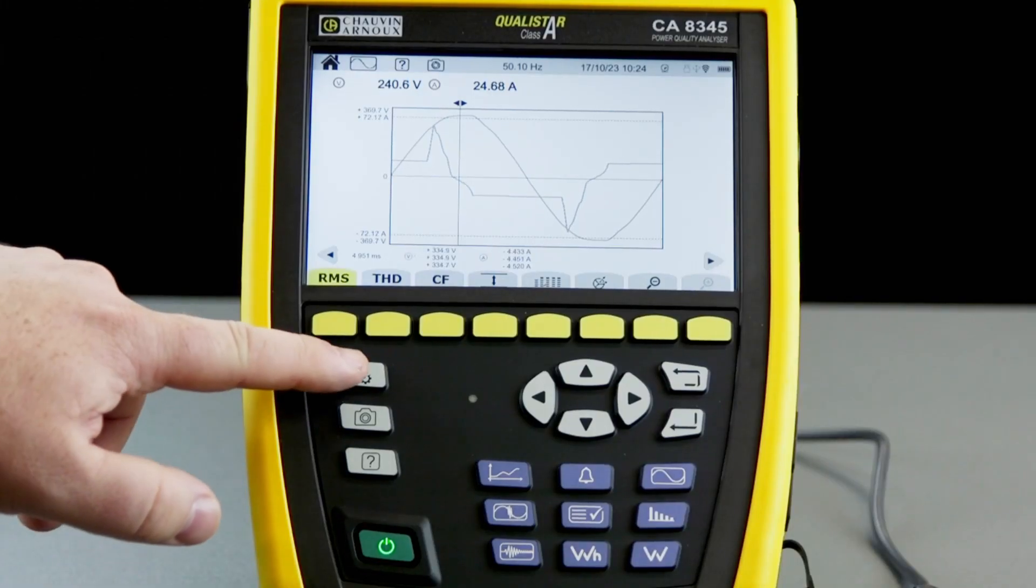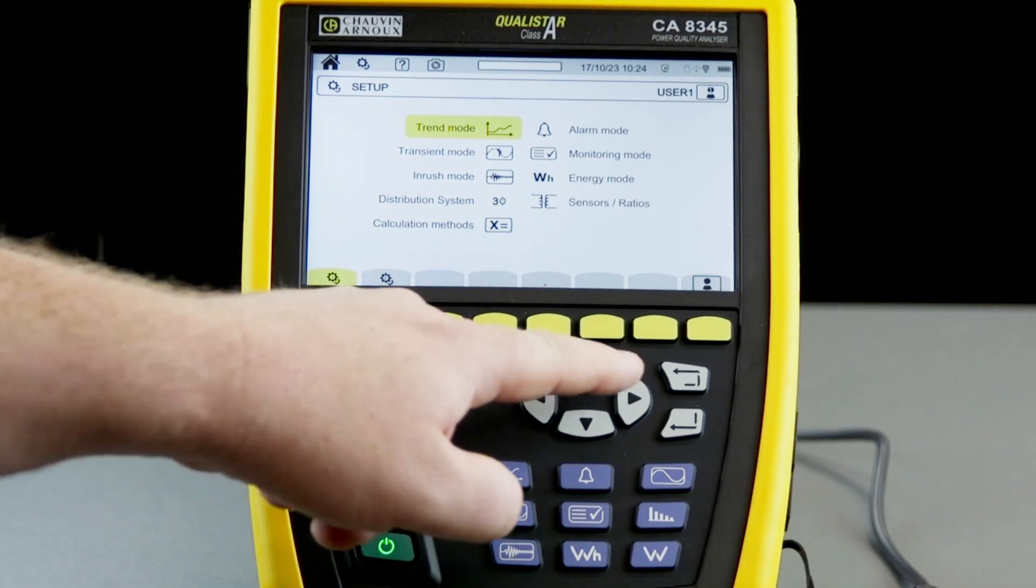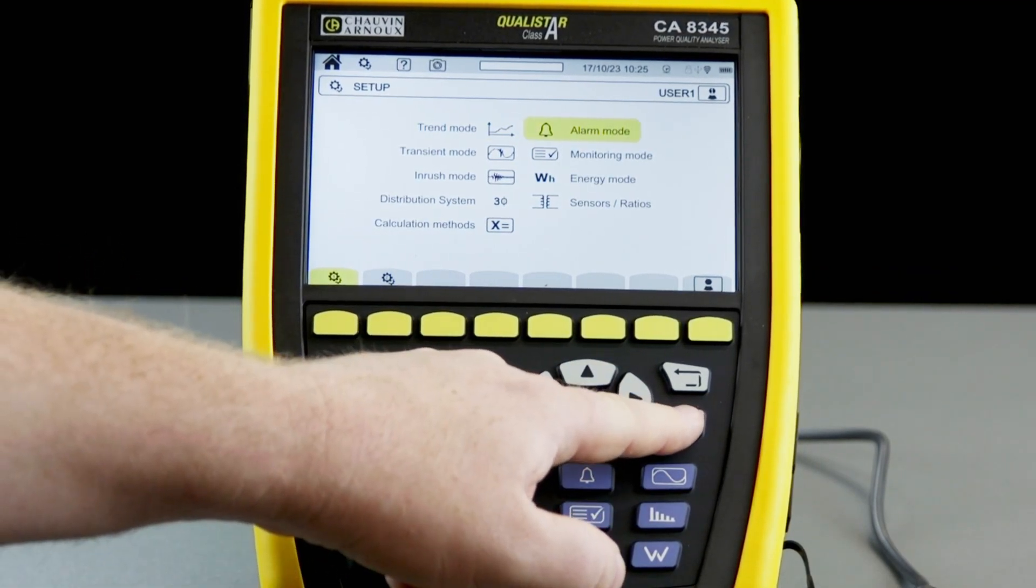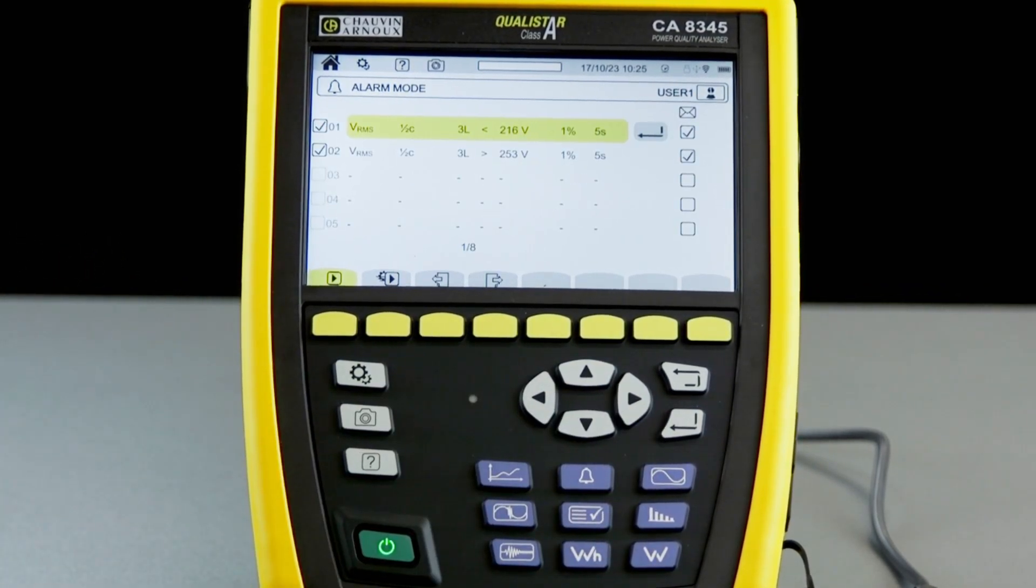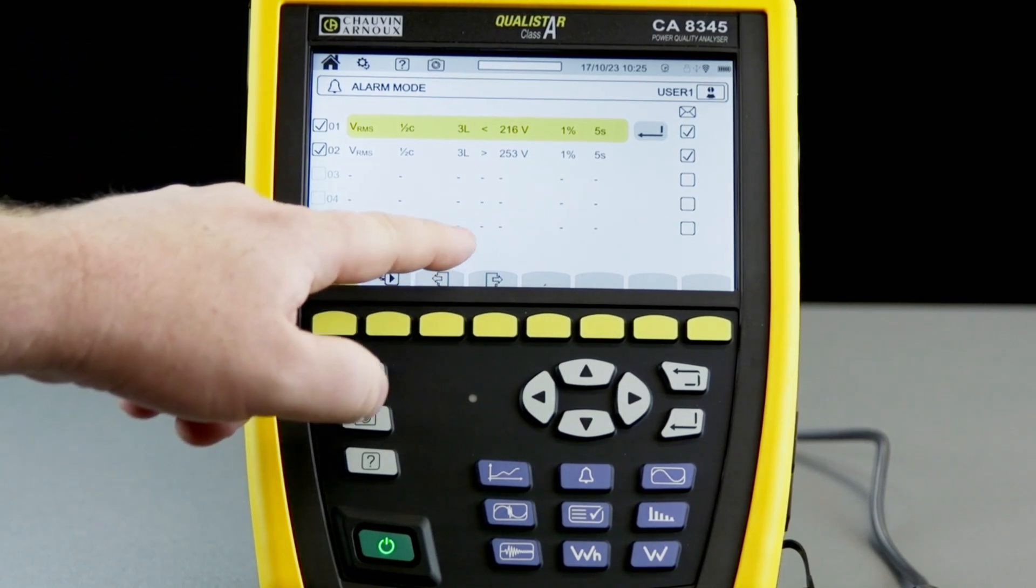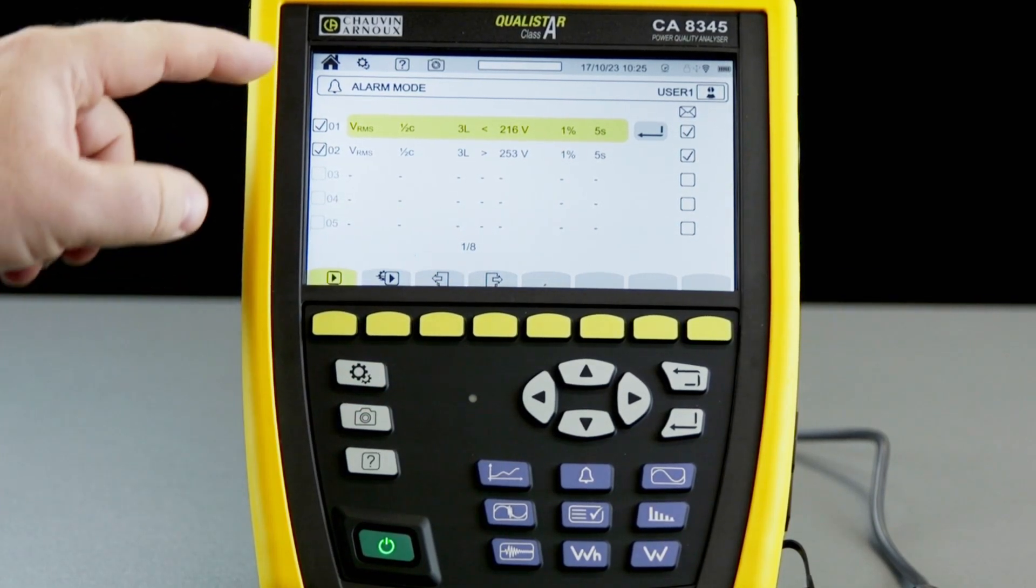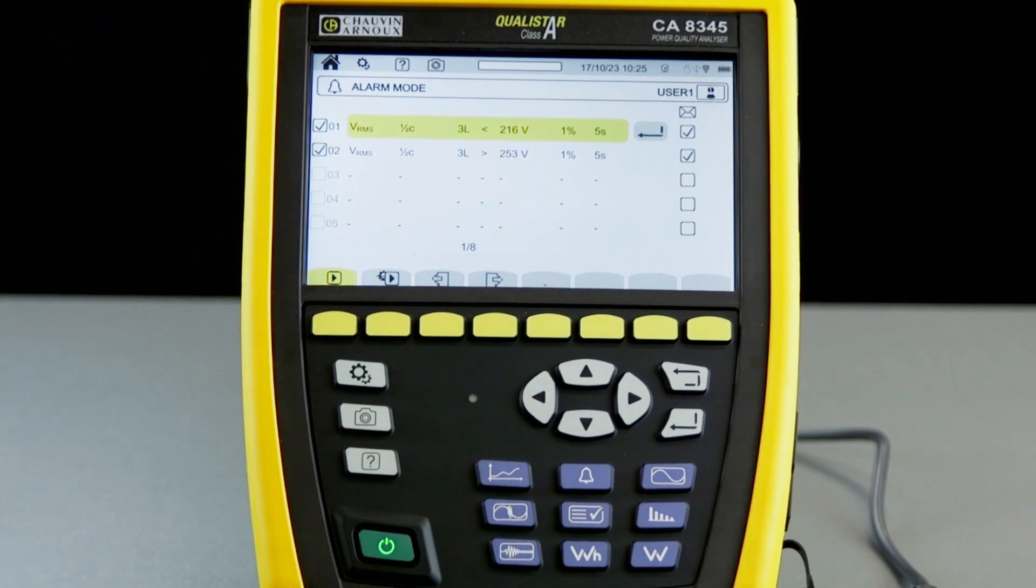Let's take a closer look at how we set up alarms on the CA-8345. The first thing we need to do is go into settings and then alarm mode. In alarm mode, you'll see there are actually eight different pages of five alarms that we can set, so that's 40 total.